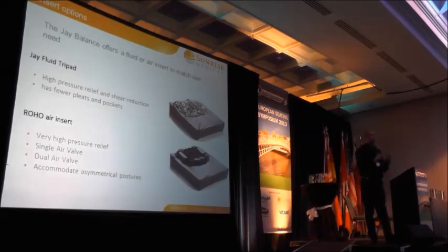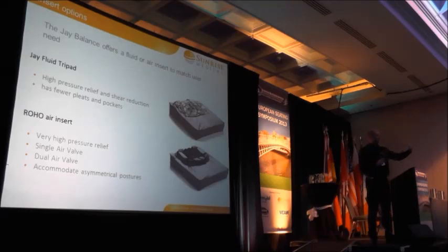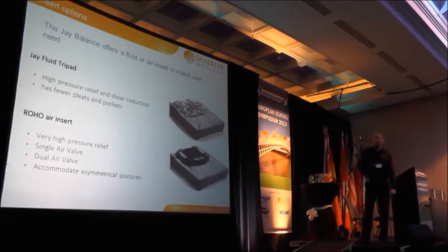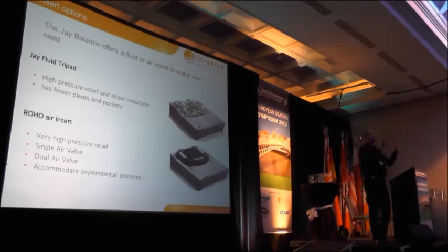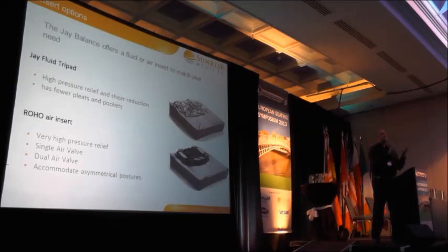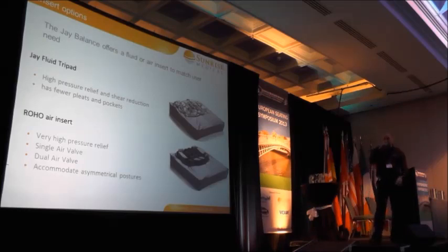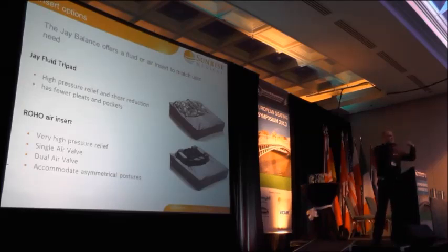What insert options do we have? From the J3, good feedback meant we kept both an air insert option and a fluid option — and we've still got both with the Balance cushion. We've got the J-fluid tripod, which has gone back to an original design of the J2: it's three compartments, and the amount of fluid in there is very similar to a J2. One of the main features, going back to that old J2 design, is that it has fewer pleated pockets.